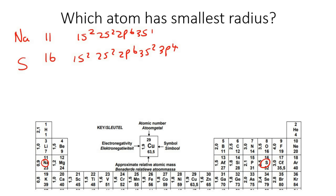If you do the electron configuration of each one, you find that because they are in the same row, they have the same amount of energy levels — three each. So we don't need to look at energy levels since that's the same for both. What we look at is the protons: Na has 11 and sulfur has 16. Because sulfur has more protons, it is more positive in the nucleus and pulls the electrons more closely towards it.